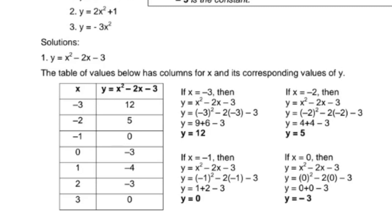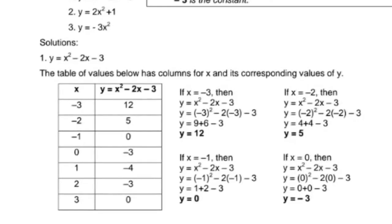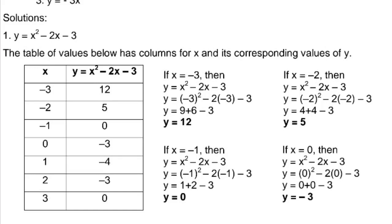For number 1, y equals x squared minus 2x minus 3. The table of values has columns for x and its corresponding values of y, with x values from negative 3 to 3. We substitute x with the given values. If x is negative 3: negative 3 squared is 9, minus 2 times negative 3 is plus 6, minus 3 gives 9 plus 6 equals 15, minus 3 equals 12. So y equals 12.